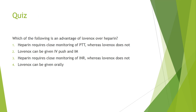Quiz question: Which of the following is an advantage of Lovenox over heparin? The correct answer is that heparin requires close monitoring of PTT, whereas Lovenox does not. Heparin is a more variable, less predictable drug — we don't send patients home on heparin and must monitor their PTT in the hospital. Lovenox is much more stable with fixed dosing, typically 1 mg/kg of body weight.